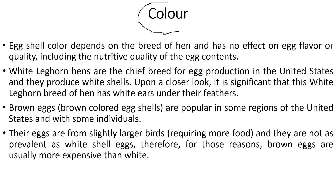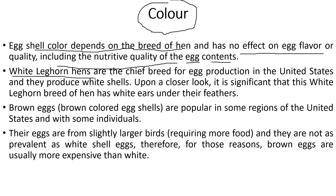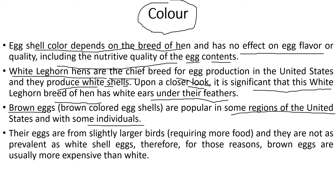Moving on to eggshell color — the color depends on the breed of hen and has no effect on egg flavor or quality, including nutritive quality. The white Leghorn hen is the chief breed for egg production in the United States and produces white shells. Notably, white Leghorn hens have white ears under their feathers. Brown eggs are popular in some regions of the US; they come from slightly larger birds that require more food.